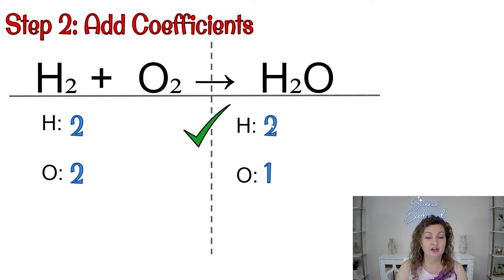You can see that our hydrogen are balanced, two and two, and then our oxygen, two and one, that is not balanced, so that's where we need to start, and we need to make this one really a two. Well, how can I do that? I can go ahead and add a coefficient in front.